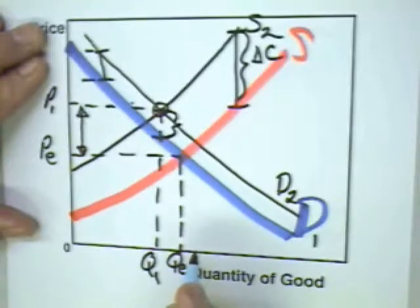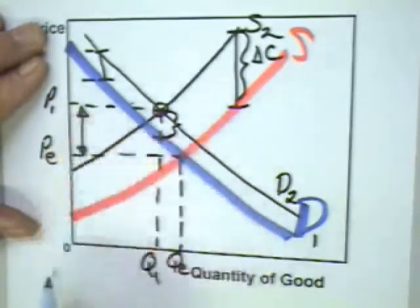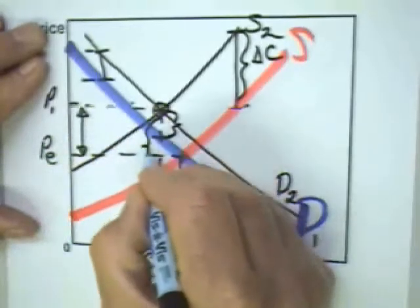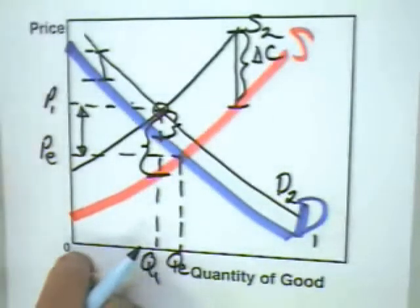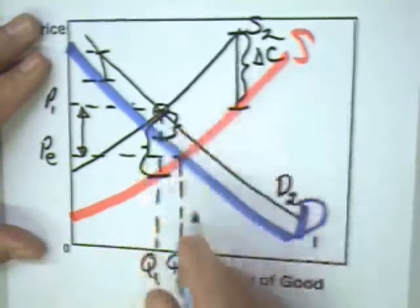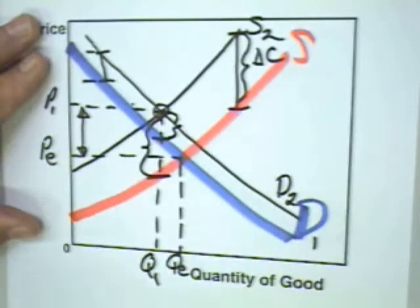Well are producers worse off? Producers get a higher price from P1 to P2 but notice that their added cost is even greater. This is like saying the producers get an increase in the price of $7 but they must incur an added cost of $9 to get that added price.